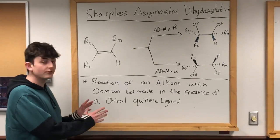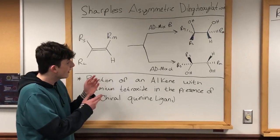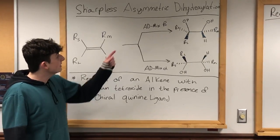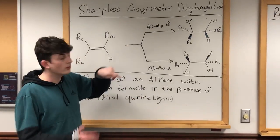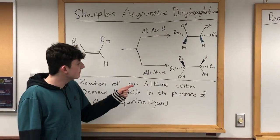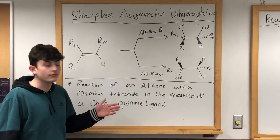The reagents for this reaction are sold in two different mixes: AD mix beta and AD mix alpha. AD mix beta adds alcohol groups from the top or front face of the molecule, and AD mix alpha adds alcohols from the bottom or back face of the molecule.